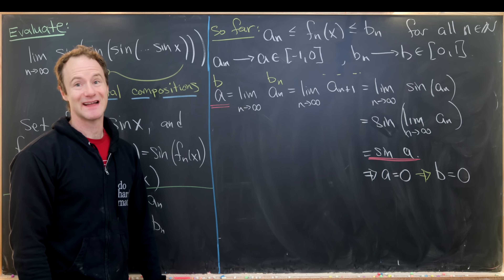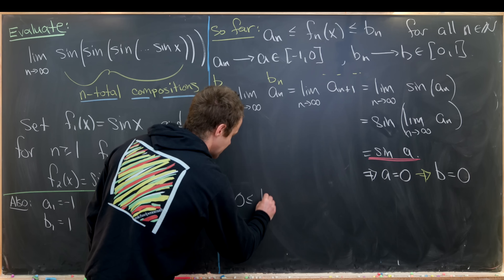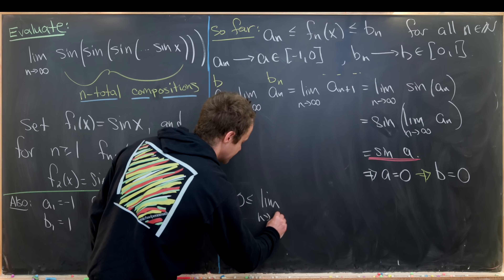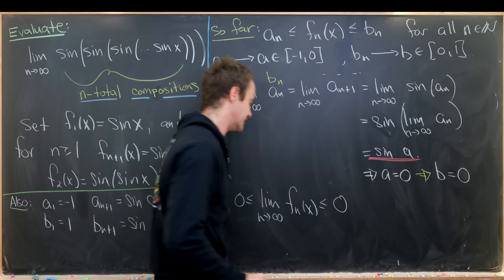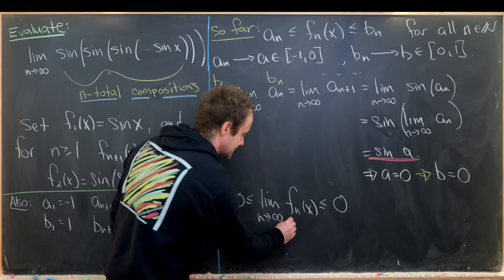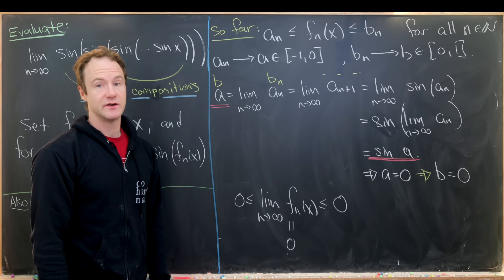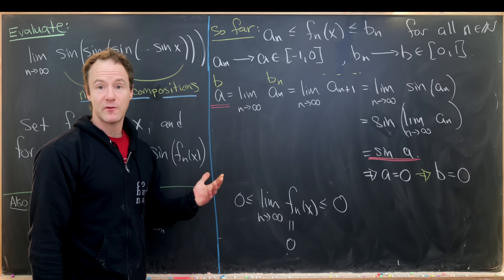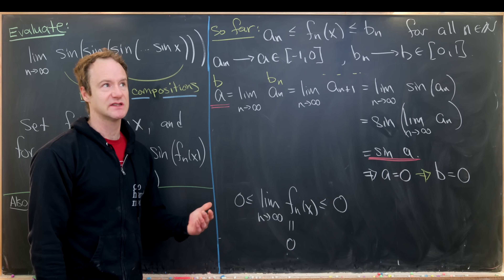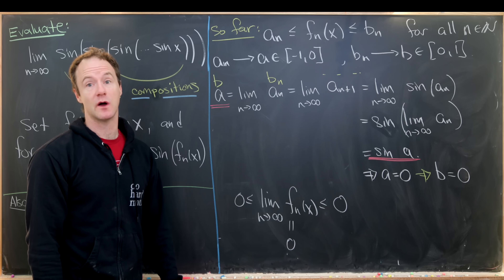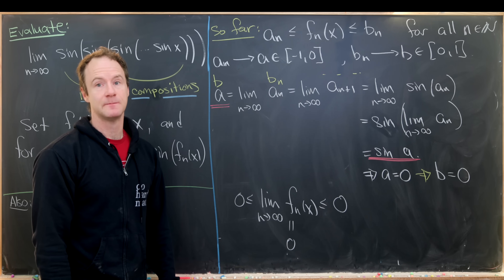That sets up the squeeze theorem exactly: 0 ≤ lim fₙ(x) ≤ 0, which tells us the limit is equal to zero, and this holds for all values of x. I graphed these functions in Mathematica, so you can see what happens as n approaches infinity as those graphs play on screen. That's a good place to stop.